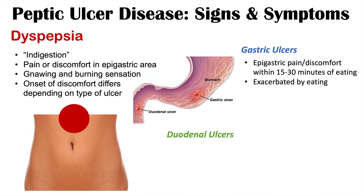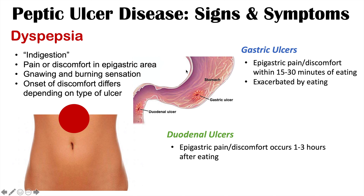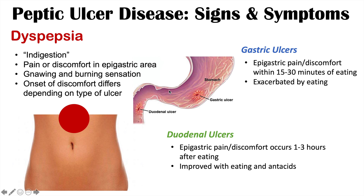Now let's talk about duodenal ulcers. The epigastric pain or discomfort that occurs with duodenal ulcers occurs later — often within one to three hours of eating. The pyloric sphincter closes, keeping gastric contents within the stomach, but will slowly open and release some gastric contents after a certain time. That acidity can then irritate those duodenal ulcers, which is why we see epigastric pain approximately one to three hours after eating. It also makes sense that this is improved with eating and antacids, as eating causes the pyloric sphincter to close, preventing gastric contents from emptying into the duodenum.